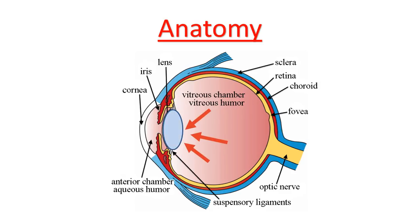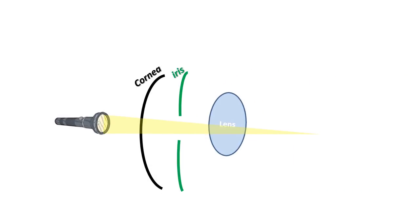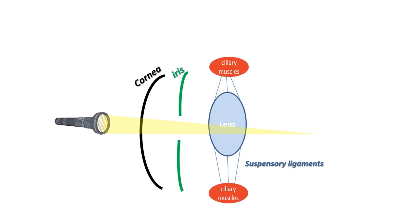Here we are discussing cataract, so we are particularly interested in analyzing the lens. As you can see, the lens is located directly behind the iris. Here you have a simplified design. Light enters the eye through the cornea, travels through the hole in the center of the iris called the pupil, and then through the lens. The lens is kept in place by the suspensory ligament of the lens, which attaches to the lens at its equator and connects it to the ciliary muscles.